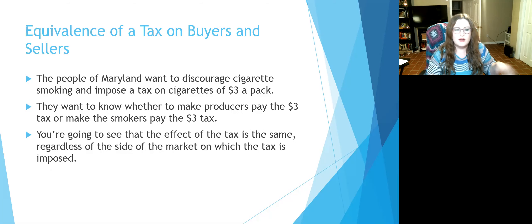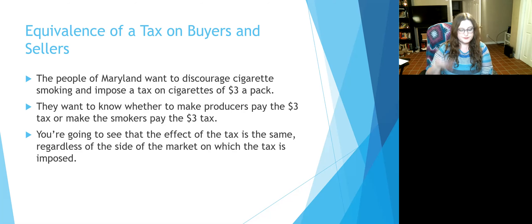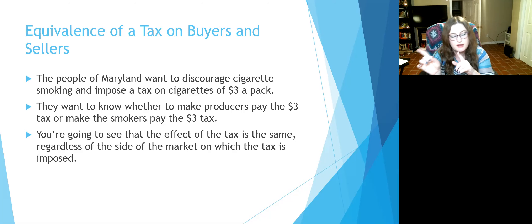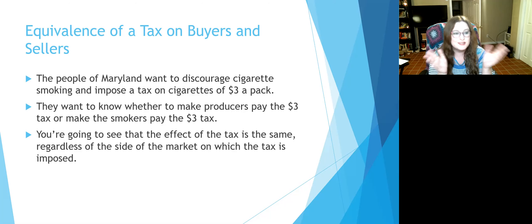We're going to explain all of this with a simple example. Let's say this is Maryland, because Maryland did put a $3 tax on cigarettes. The state of Maryland wants to discourage people smoking — they know they want a $3 tax but don't know who to put it on. Do they go to the cigarette companies and say you have to pay $3 for each pack sold, or do they go to consumers and say there's an extra $3 at the register? Which one should they put it on? It turns out it doesn't really matter.